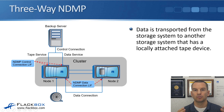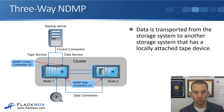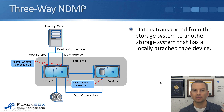The last type is three-way NDMP. With three-way NDMP, data is transported from the storage system to another storage system that has a locally attached tape device. In this example, the tape device is attached to Node 1, control is coming from the backup server, and we're backing up a volume on Node 2 to a tape device attached to Node 1 — that counts as three-way NDMP.